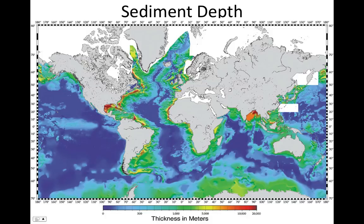Even though terrigenous sediments cover such a small portion of the sea floor, they are still the most abundant sediment because they are piled so thickly. And even though biogenous sediment covers the majority of the sea floor, it's piled so thinly that it remains the second most abundant sediment.